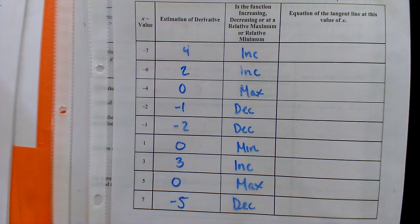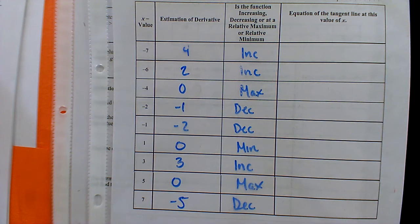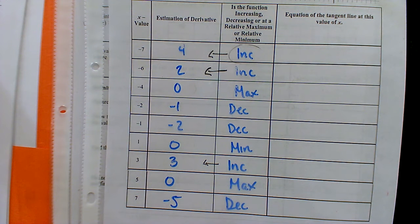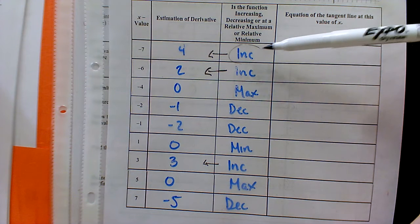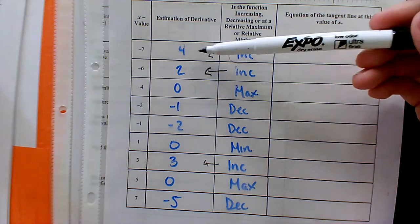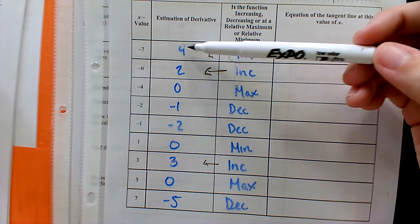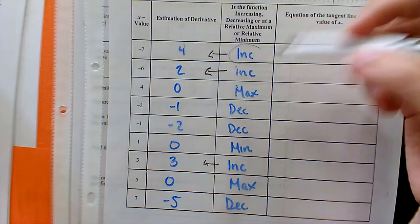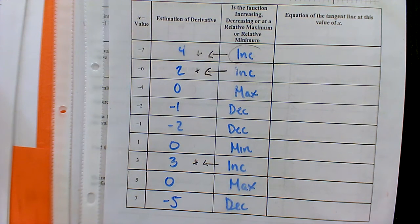Do you notice any patterns? If a function is going in a certain direction, the derivative will be going in a similar direction. Derivative is slope — you can use them interchangeably. If our graph is going up, if we're increasing, the slope will also be positive. Notice how if our graph is increasing, the derivative, a.k.a. slope, is positive. So if our graph is increasing, our derivative is positive — that's one relationship.